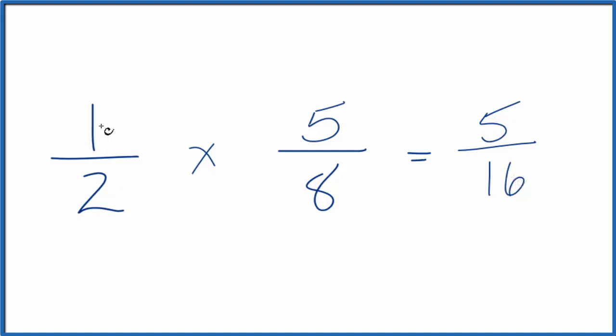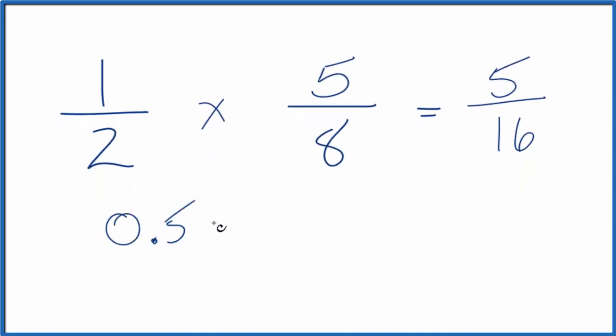If we looked at the decimals, one divided by two, that's 0.5. We could multiply that by five divided by eight, which is 0.625.